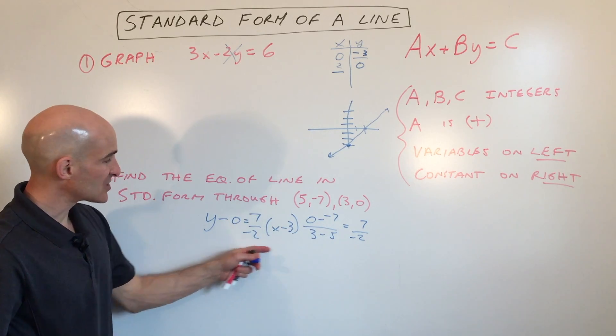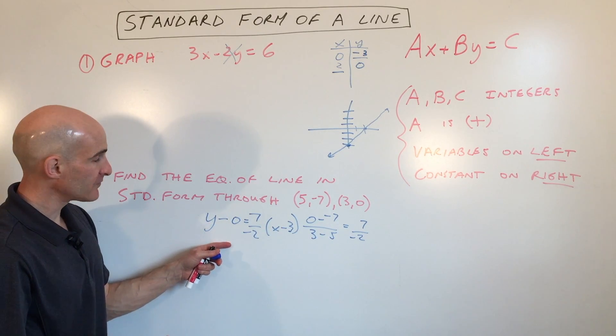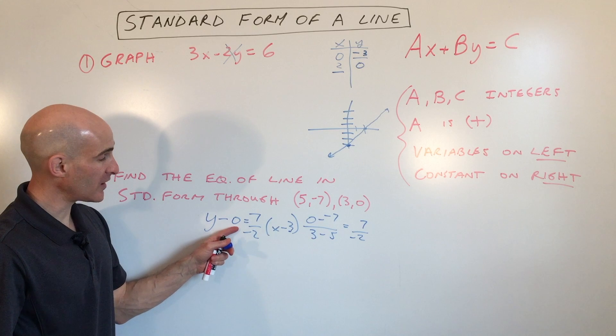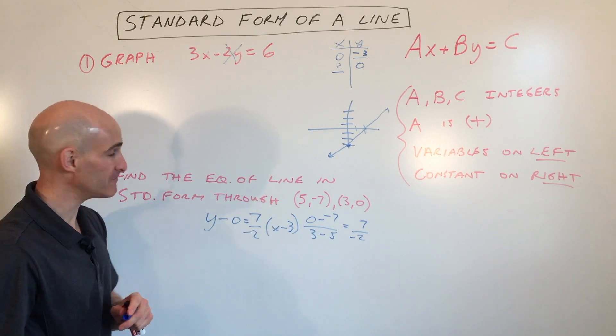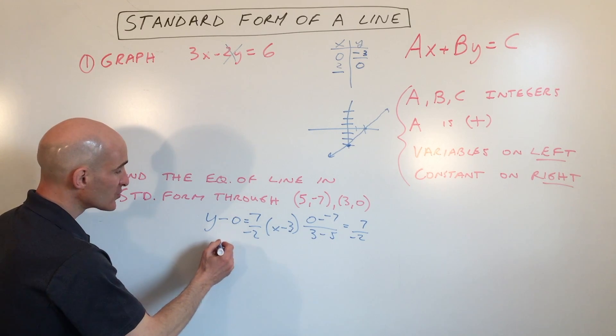And so now I just substituted this into the point-slope form. Y minus the y-coordinate of the point equals the slope times x minus the x-coordinate of the point. But now what we're going to do is simplify.